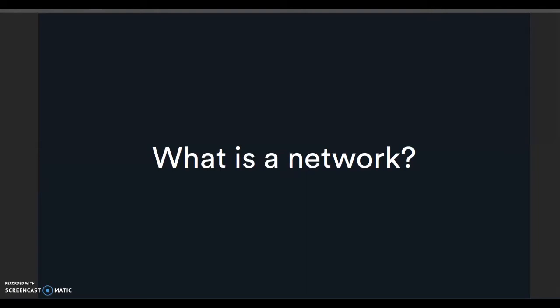What is a network? A network is different to a group — it includes something more: a particular set of connections between people in the group. These connections or ties, and a particular pattern of these ties, are often more important than the individual people themselves.